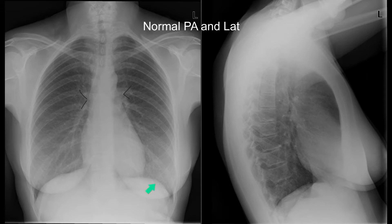Here is the left hemidiaphragm. You lose a little bit of the left hemidiaphragm when the heart sits on it, and then it becomes visible again over here. You see more of the right hemidiaphragm than the left hemidiaphragm because of the heart shadow.